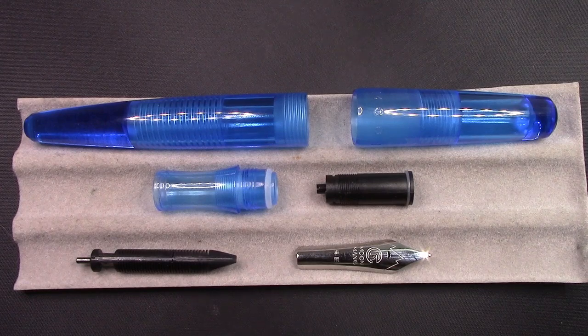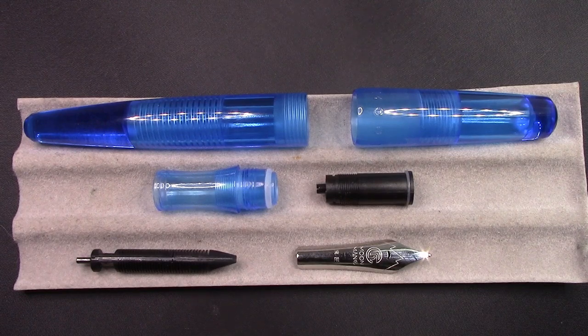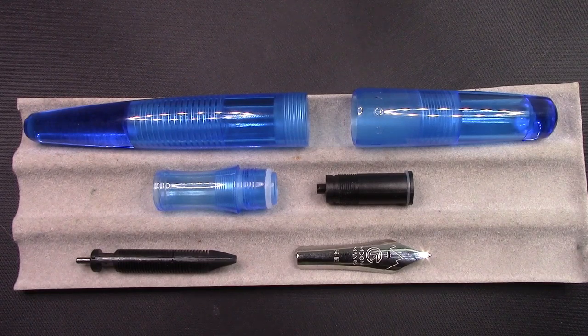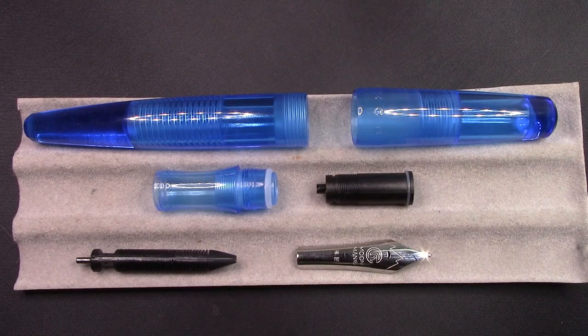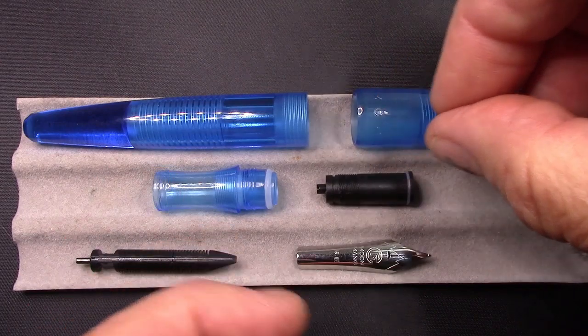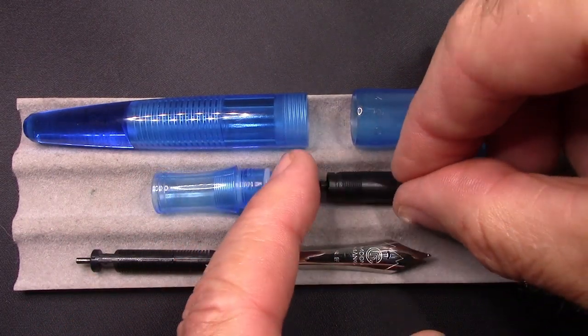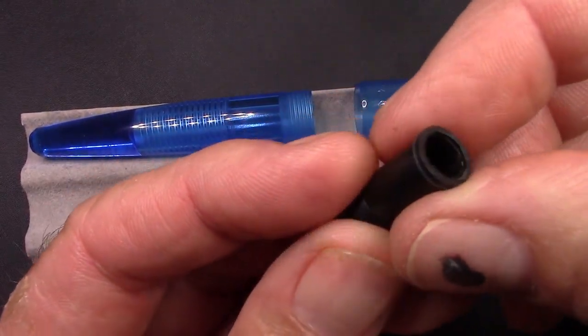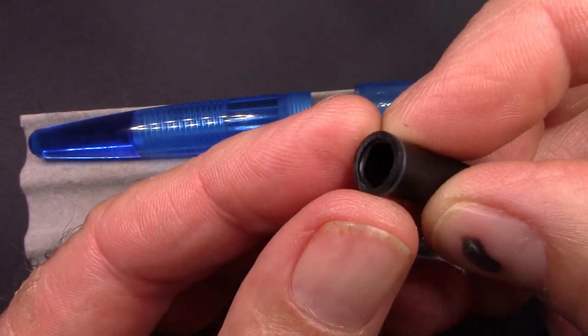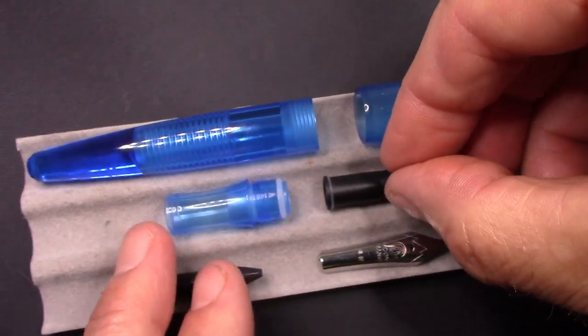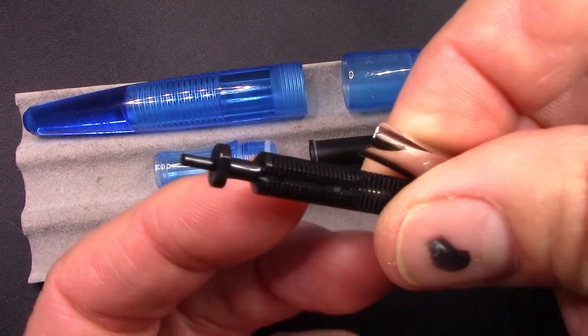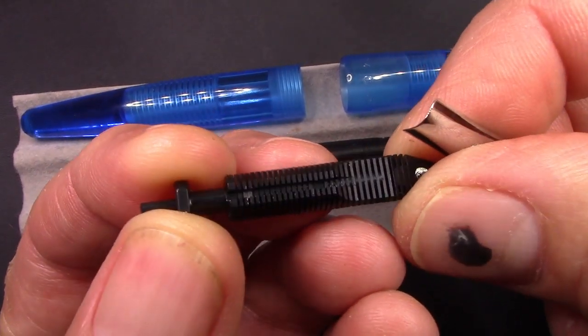This is the MoonMan pen completely disassembled, and it was very easy to take apart. All the parts are machined well, fit together well. Much to my surprise there are three O-rings in this design. This is that nib collar, nib assembly. You can see it's keyed so the nib only fits in one way. It's flat on the bottom here.